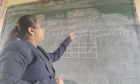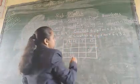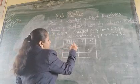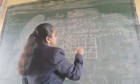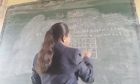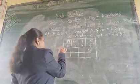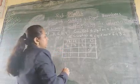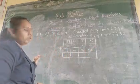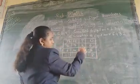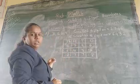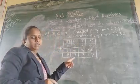Then we add the other number: 6432. So 6 plus 2 is 8, 4 plus 3 is 7, 3 plus 4 is 7, and 6 plus 2 is 8. So the answer is 8778.